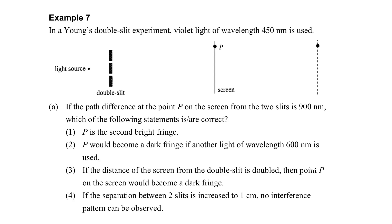Let's take a look at the following two examples related to the double slit experiment. We have a monochromatic light directed at the double slit, and we have the path difference of point P on the screen.